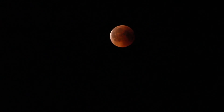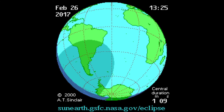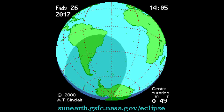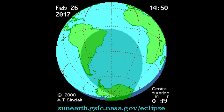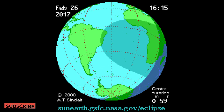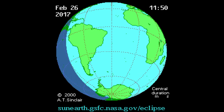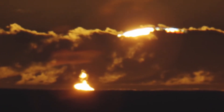Second contact: the full eclipse, or annularity, starts. The ring of fire appears for a few seconds just as the annularity begins. Bailey's beads, which look like beads of light, can sometimes be seen at the edge of the moon's silhouette.